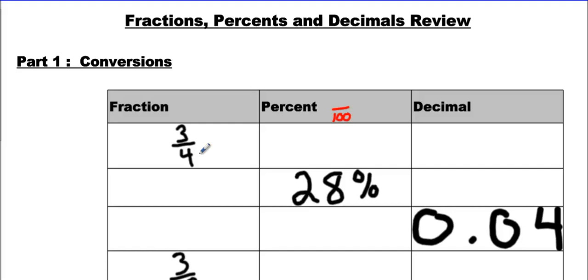Three out of four, that's pretty simple, just times by 25. And whatever you do to the bottom, you have to do to the top. So doing that will get you 75 over 100. And since it's out of 100, we just write 75%.